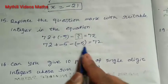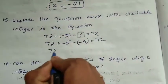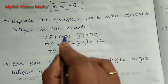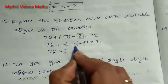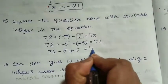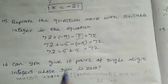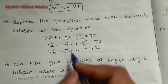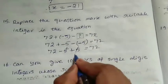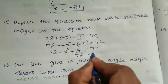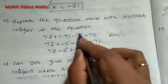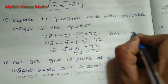Let us verify: 72, then plus into minus gives minus 5, and minus into minus gives plus 5. Minus 5 and plus 5 cancel each other. Therefore the final answer is 72 equals 72. So the value in the box is minus 5.